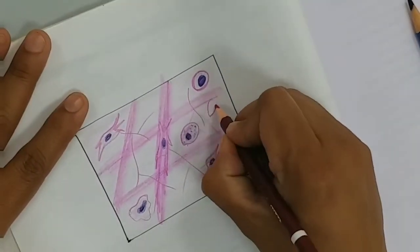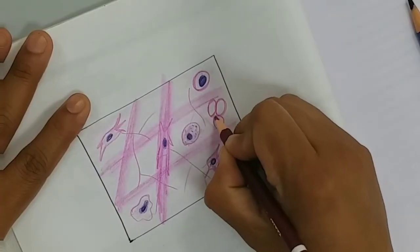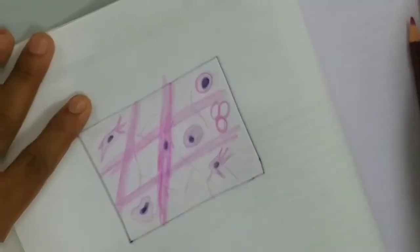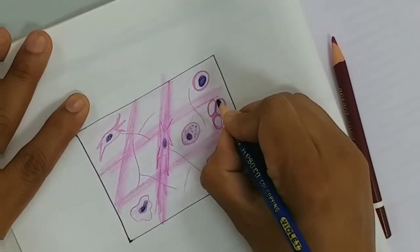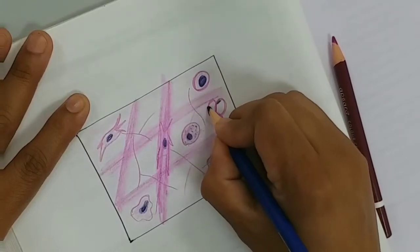Fat cells have a peripherally thin rim of cytoplasm and the cell looks like an empty cell.